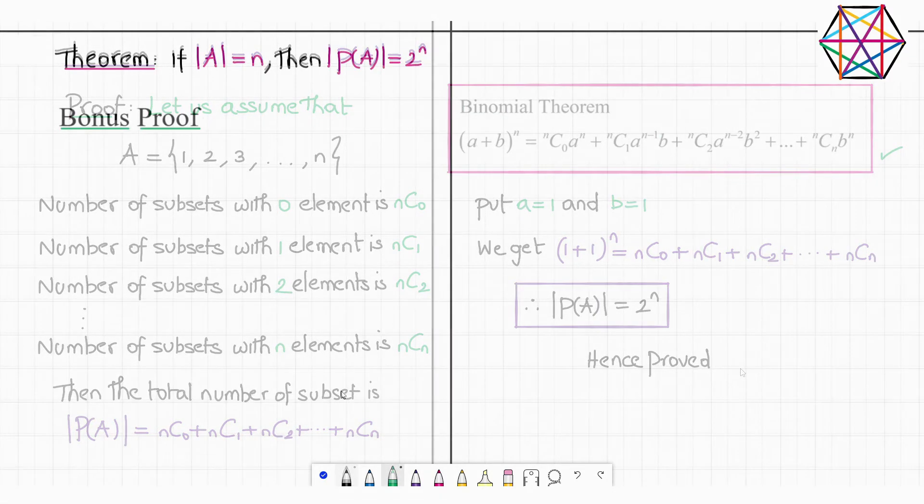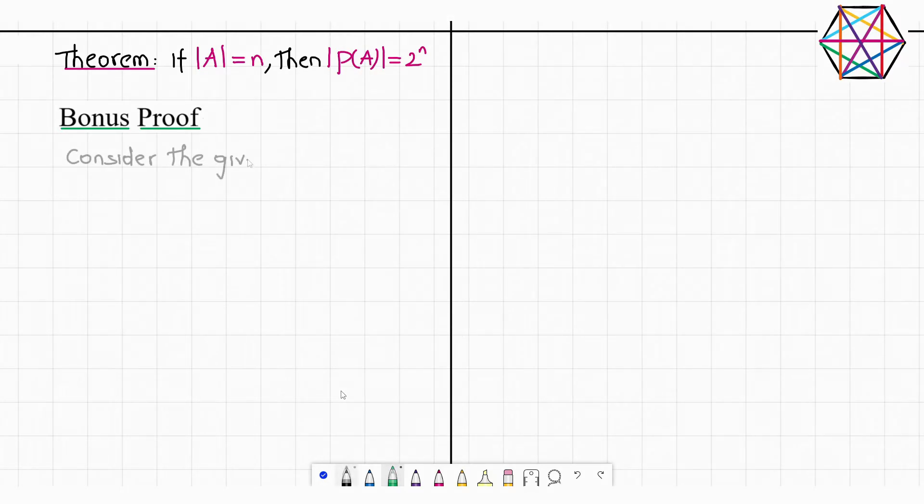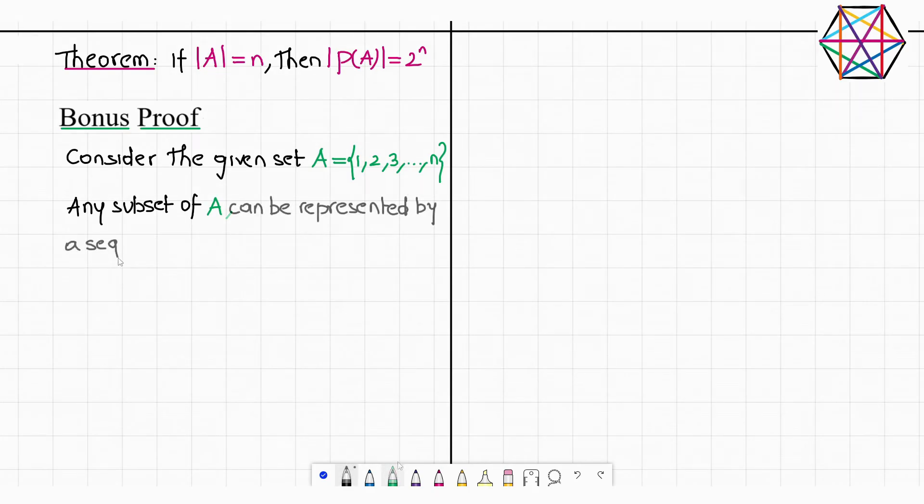And here is the bonus proof which I promised you. Consider the given set A with elements 1, 2, 3, 4, so on up to n. Any subset of A can be represented by a sequence of 1s and 0s. 1 means that it belongs to a subset and 0 means that it doesn't belong to a subset. I'll explain what it means using the following example.